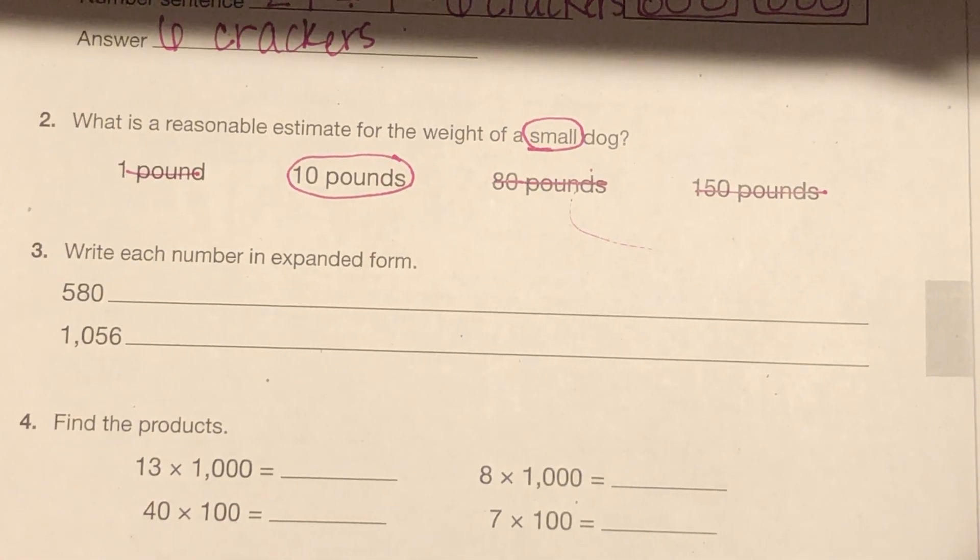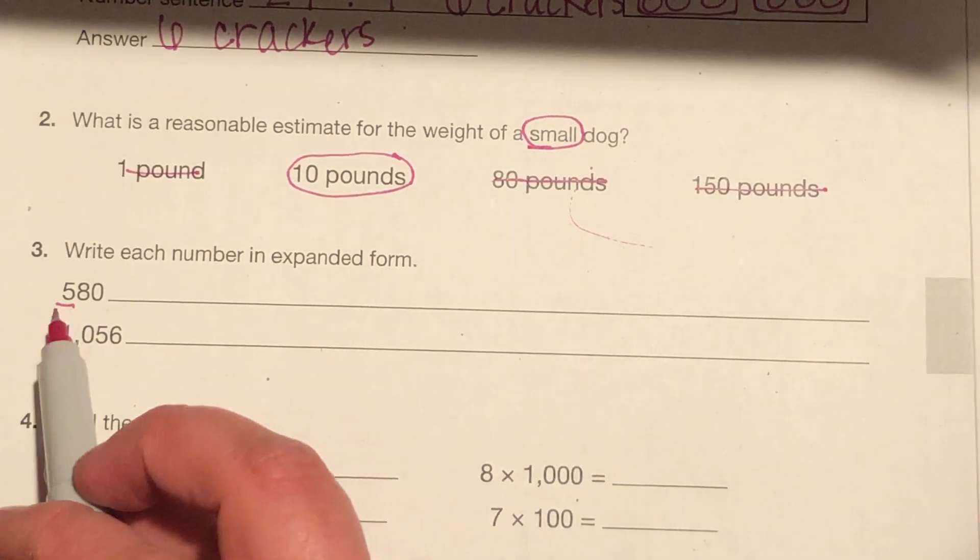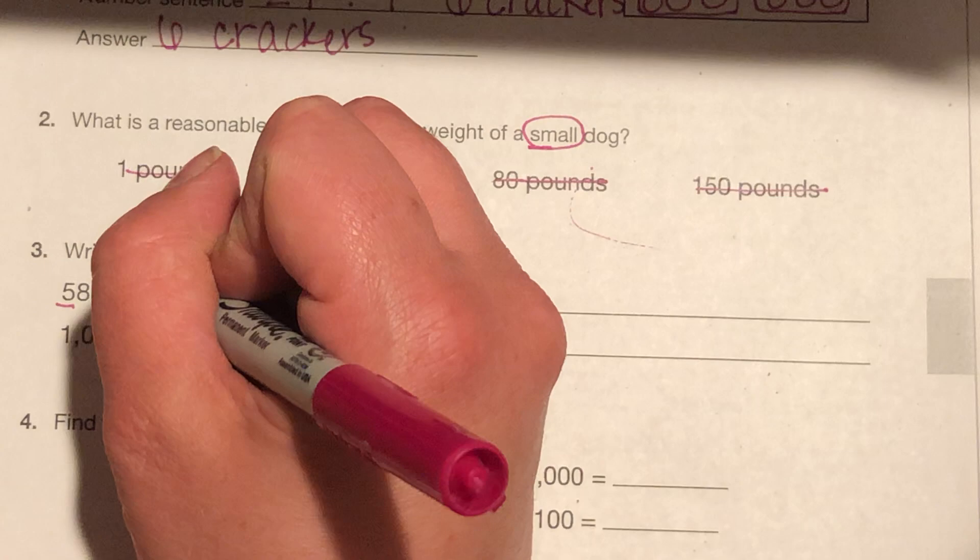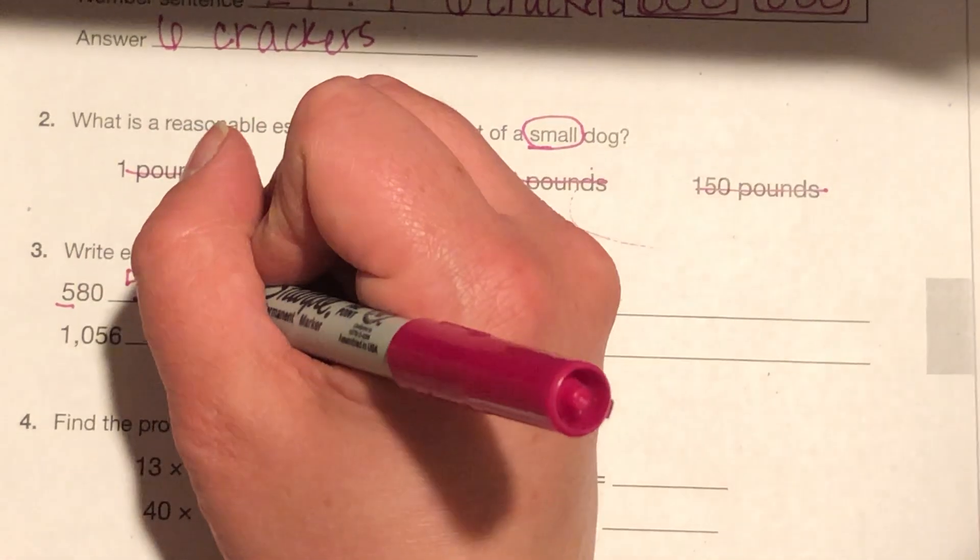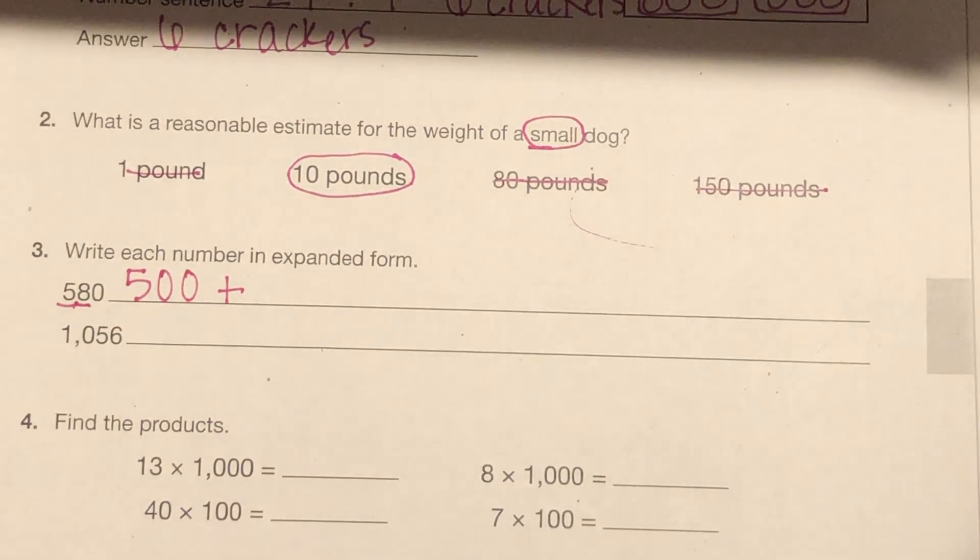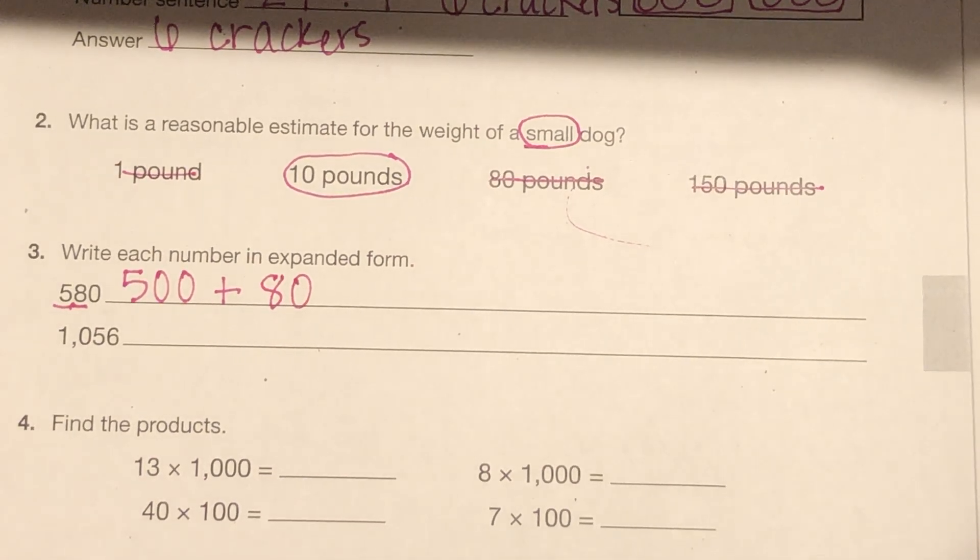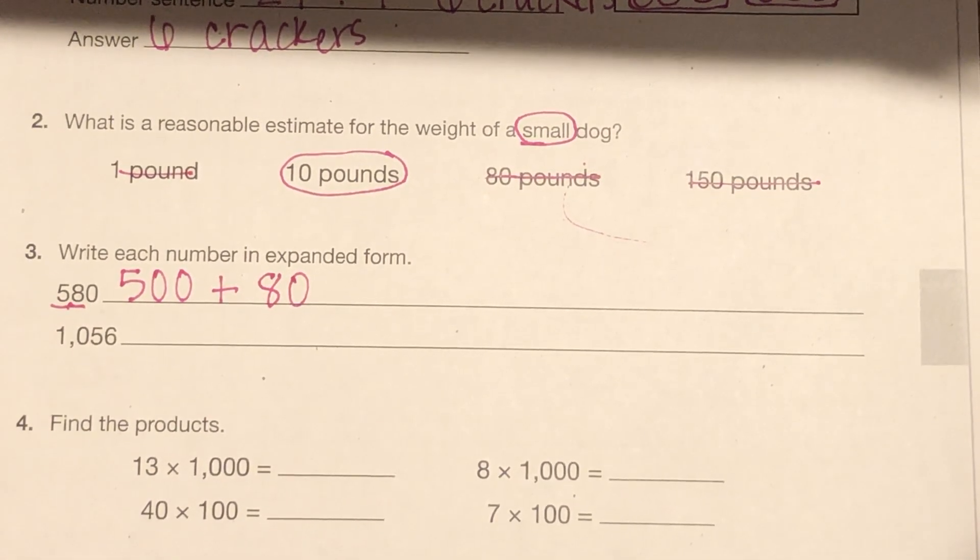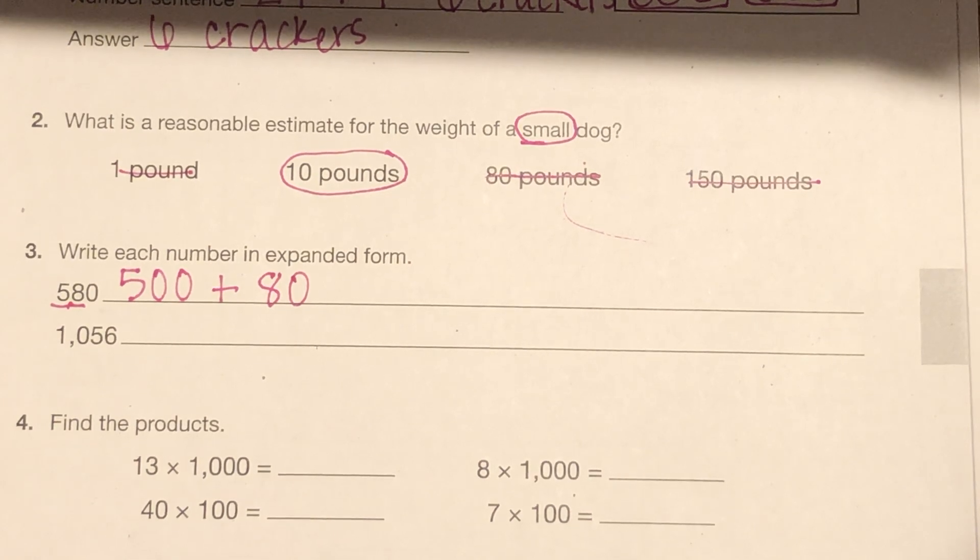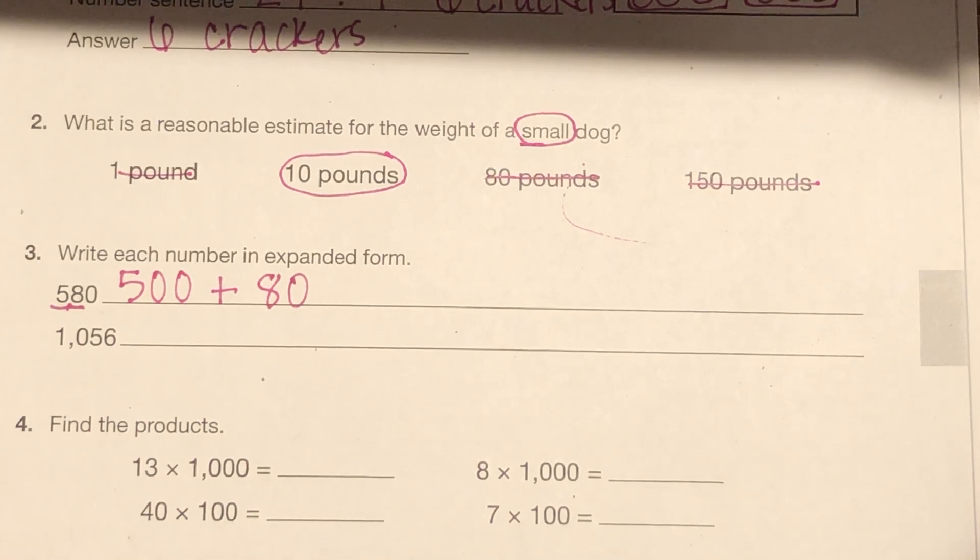Number 3. Write each number in expanded form. I'm going to start in my hundreds. I see that there's three place values. So I know I have hundreds, tens, ones. 5 is representing the number 500. The 8 in my 10th spot is representing what number? 80. And I have a zero in my one spot, which is not representing anything. It's just a place value holder. So my expanded form equation is 500 plus 80.